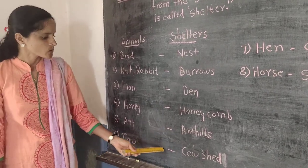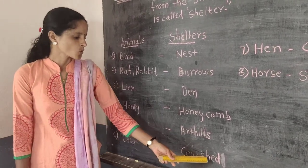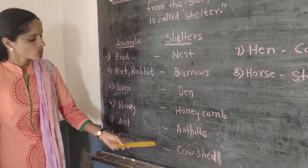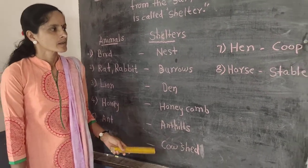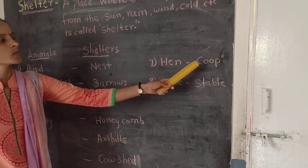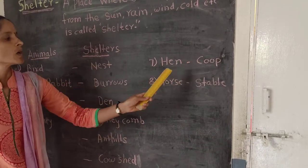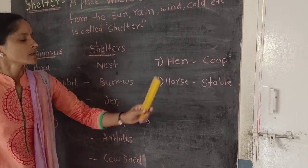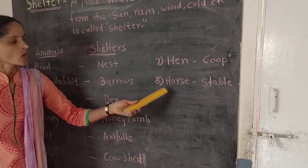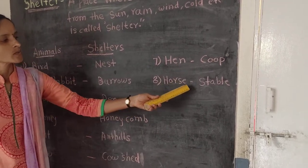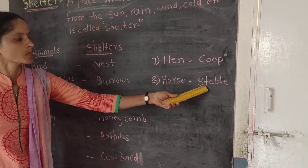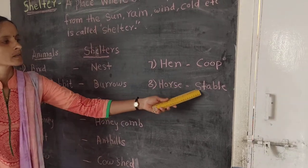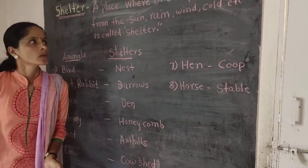Cow — shelter is shed. In Marathi, gay gohet rati. Hen — shelter is coop. In Marathi, komdi khura rati. Horse — shelter is stable. In Marathi, ghoda tabela ratu.